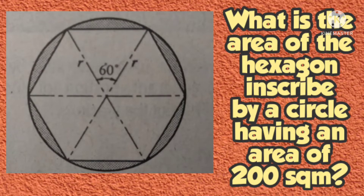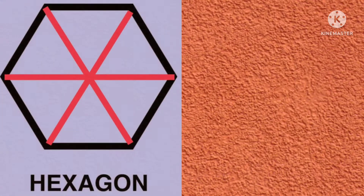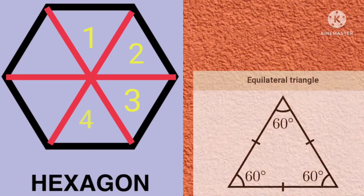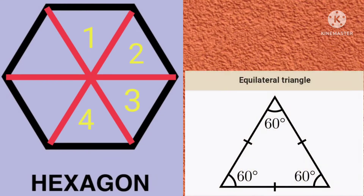The interior angle of one of the triangles at the center of the hexagon is 60 degrees. We should note that the six triangles formed inside the hexagon are both equilateral and equiangular, which means all the interior angles of the triangles are 60 degrees and all their sides are equal.